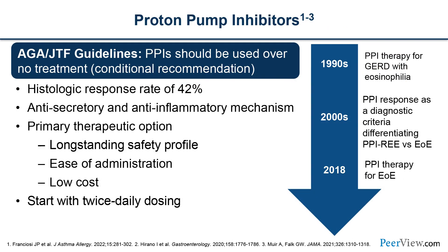Regarding proton pump inhibitors, the AGA JTF guidelines suggest that PPIs should be used over no treatment. The histologic response rate is about 40% to 50%. They have both anti-secretory and anti-inflammatory activities — it's not just acid suppression. It's the primary therapeutic option because of its longstanding safety profile, ease of administration, and low cost, and you start with twice-daily dosing. The role of the PPI in therapy has changed over time — initially a PPI trial was required before making the diagnosis, but it was realized that PPI-responsive esophageal eosinophilia is really EOE, so now PPI is a primary therapy and the PPI trial is no longer indicated.